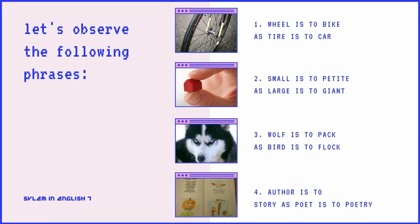Let's observe the following phrases. One: Wheel is to bike, as tire is to car. Two: Small is to petite, as large is to giant. Three: Wolf is to pack, as bird is to flock. Four: Author is to story, as poet is to poetry.